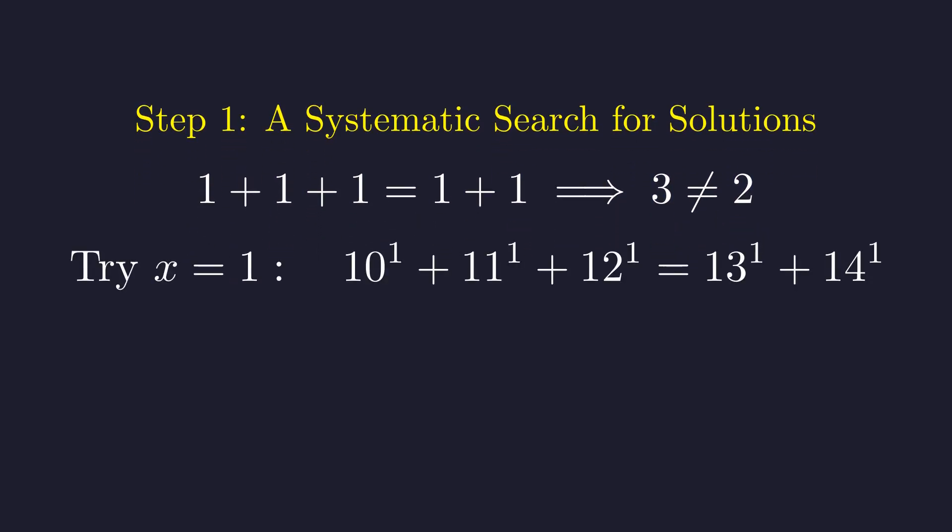Let's move on to x equals one. The left side adds up to 33, but the right side only gives us 27. So x equals one doesn't work either.